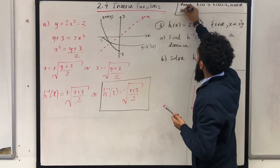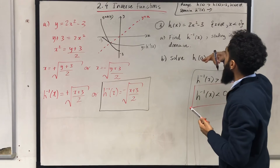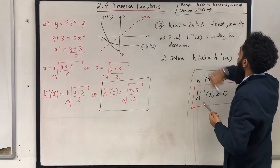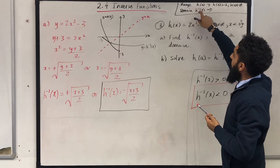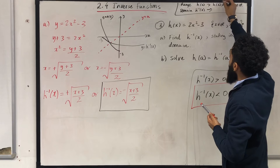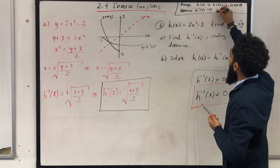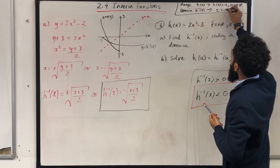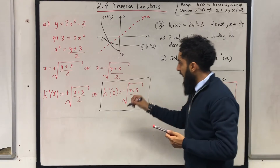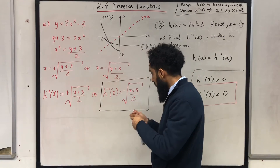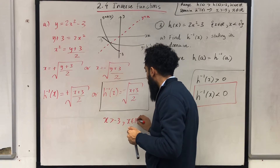So the domain of the inverse function of h of x, by definition, is just the range of h of x. The range of h of x is h of x greater than minus 3. For the domain of the inverse function of h of x, instead of writing h of x we write x, because x is your input — that is your domain. So the domain of the inverse function of h of x is x greater than minus 3, where x is a real number.